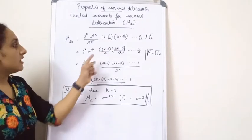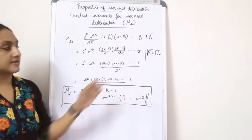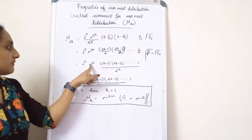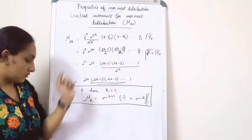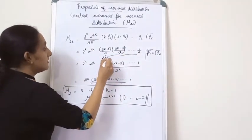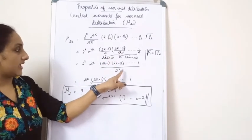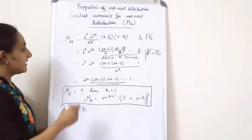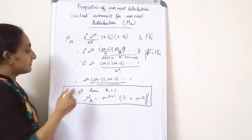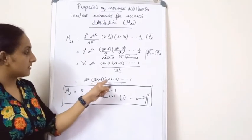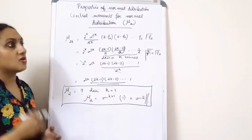Taking the LCM, each term is written as 2k minus 1 by 2, 2k minus 3 by 2, etc. The denominator has k factors of 2, which is 2 raised to k. The 2 raised to k in the numerator and denominator cancel. Finally, mu_2k equals sigma raised to 2k times 1 times 3 times 5 times dot dot dot times 2k minus 1. This is the formula for case 1 when the central moment order is even.